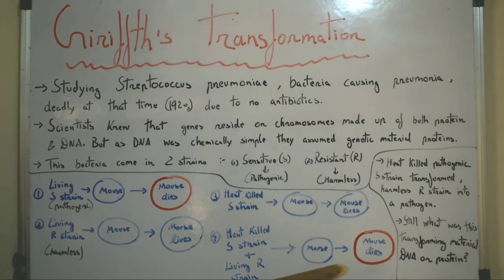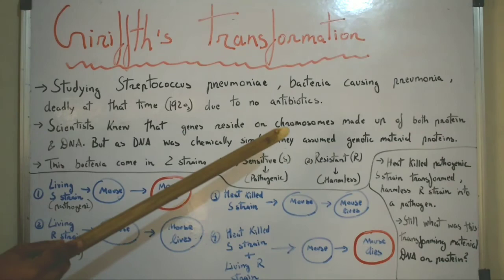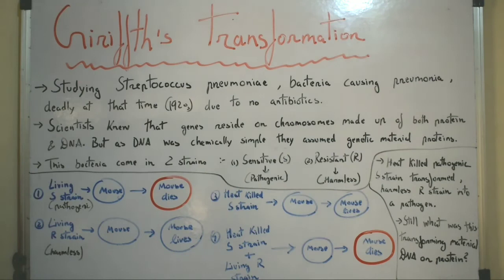From this experiment, Griffith concluded that the heat-killed pathogenic S strain had transformed the harmless R strain into a pathogen. However, what this transforming material was — DNA or protein — was still not known. This was the first experiment that ultimately led to the conclusion that the genetic material was DNA and not protein, which will be discussed in the next lecture on the Avery, MacLeod, and McCarty experiment.